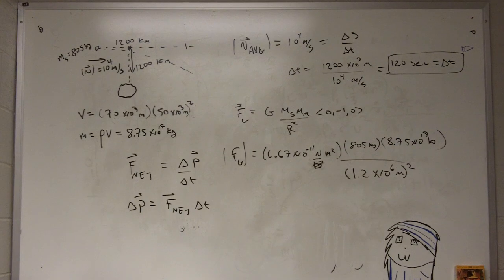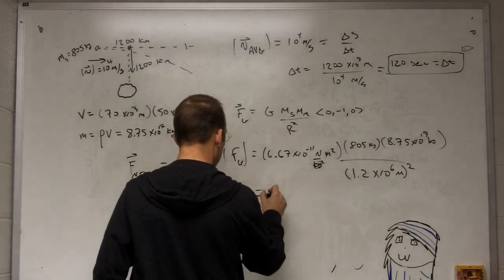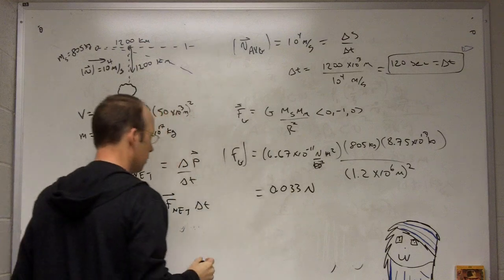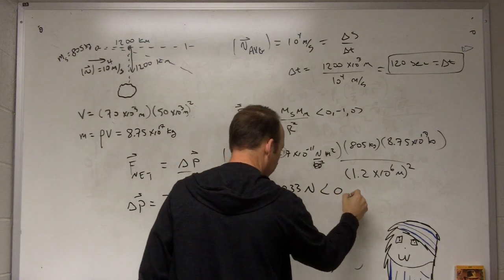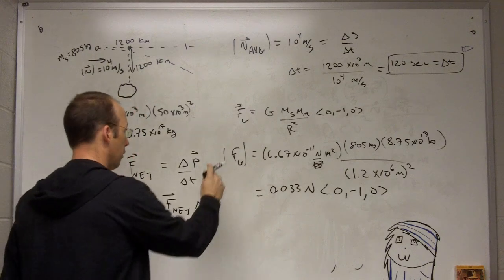And I get 0.033 Newtons. And I'll go ahead and leave that (0, -1, 0), that makes it a vector. I don't have to do that, that's fine.